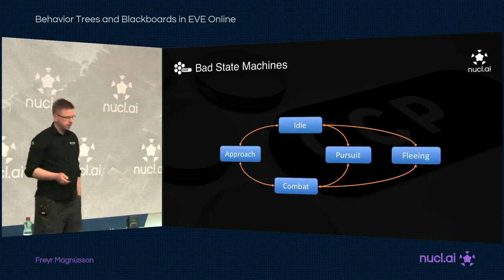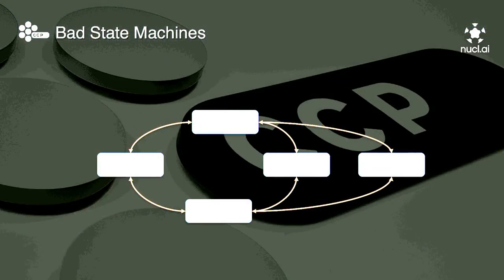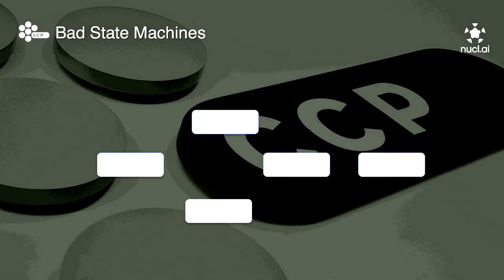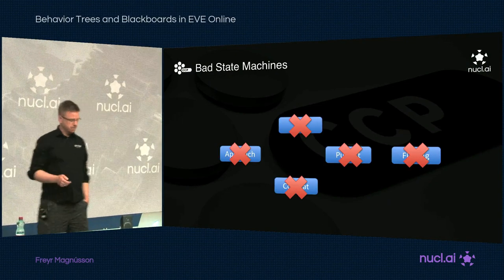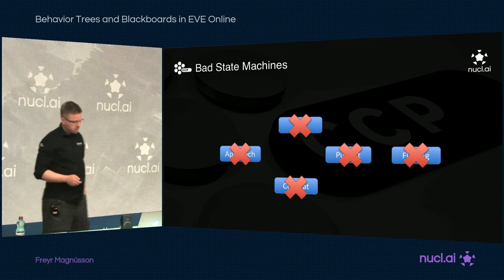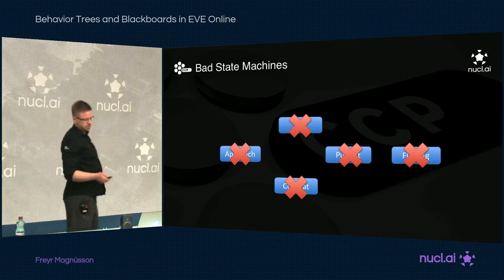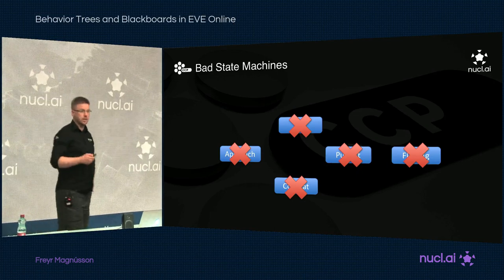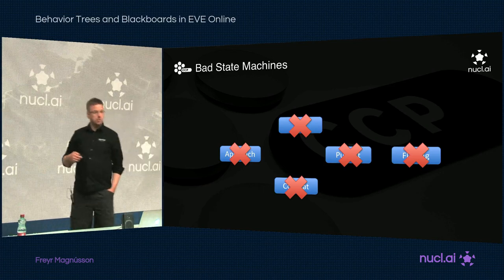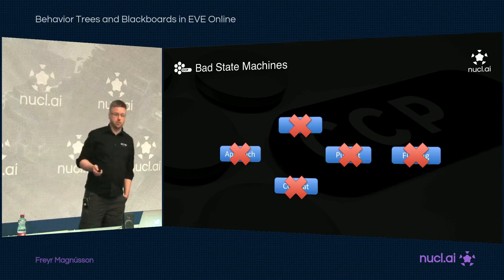The old AI was basically a state machine, which isn't so terrible in itself, but this state machine was a bit different — it didn't really define any transitions, and it didn't really define any proper states either. The states were just constants shared by all kinds of different structures: NPCs, missiles, clouds, or whatever. You were never really sure what states were available, what should happen in any of those states was pretty ambiguous, or how you should get into or out of those states without breaking something.